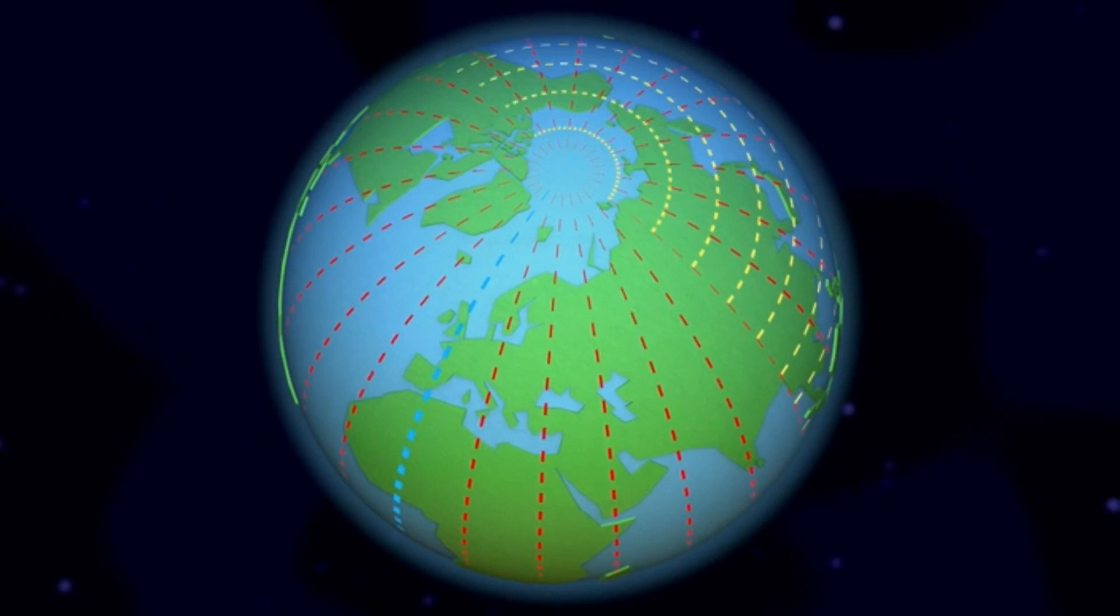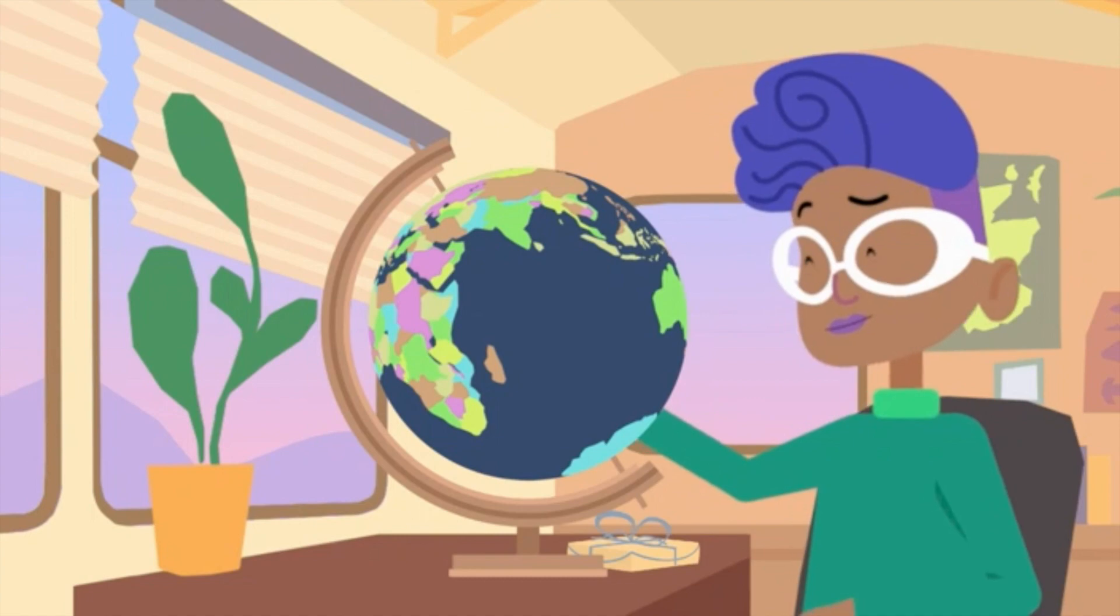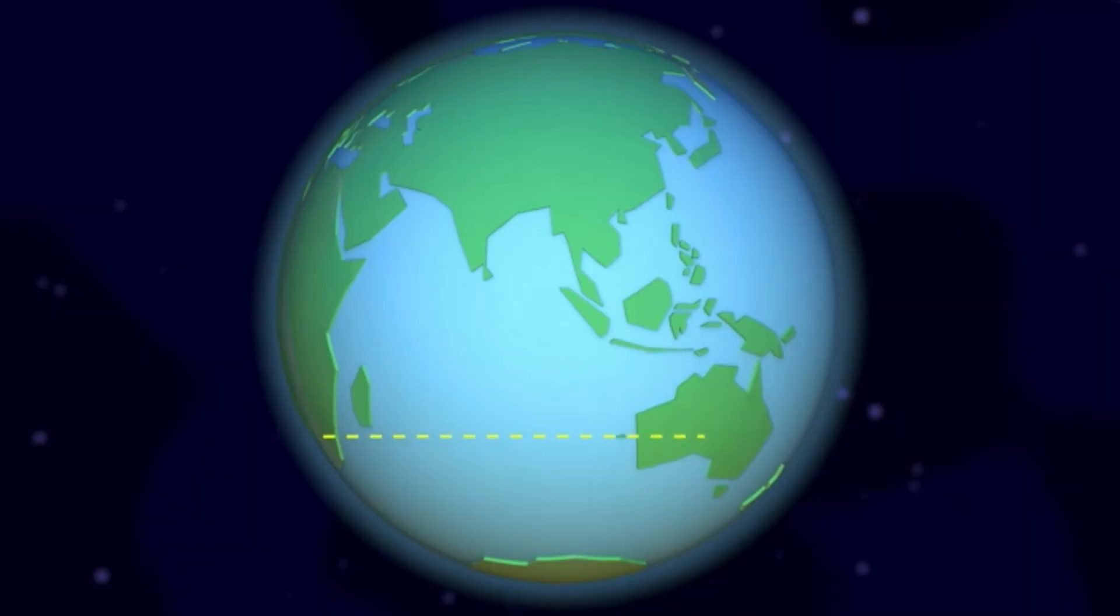If I want to say where a place is in the world, I just need to look at where the lines cross and read the numbers. Ah, there he is. Latitude is 32 degrees south and longitude is 115 degrees east.